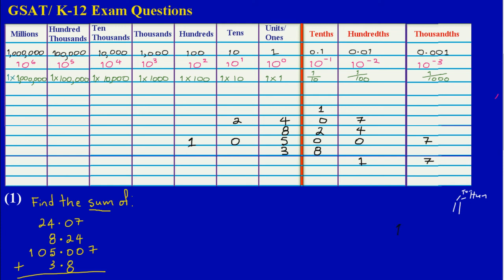So in the tenths column I also get 11. I drop the right-hand 1 into the tenths column and carry the left-hand 1 into the units column. Let me change the color to make this clear — the 1 stays in the tenths column, and the carried 1 moves up to the units column.